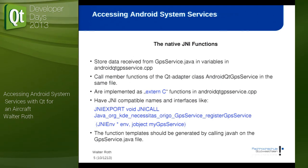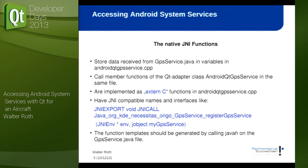The first ingredient is the native JNI functions. They store the data that comes from the Java GPS service in global variables, and after storing it, they call the QObject-derived class to further distribute the data to the Qt application. The function names are generated by a tool called JavaH, which creates a C header from the GPS service Java class. I strongly recommend not writing these names by hand.